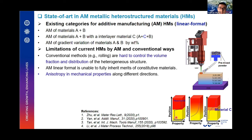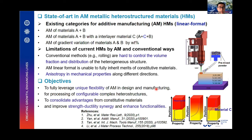For instance, if loading is applied in one direction, fracture will happen at the weaker material, so the full benefit of the stronger material cannot be utilized. This is a typical anisotropic mechanical property in linear-format heterogeneous materials. Therefore, we want to carry out research to fully leverage the unique flexibility of AM in design and manufacturing, processing configurable complex heterostructures in multi-materials to consolidate the advantages of each constituent material and improve the strength-ductility synergy.